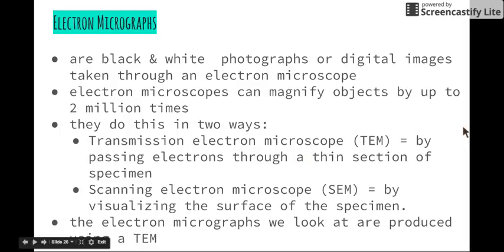Before we go on to actually have a look at some electron micrographs and start analyzing them, we obviously need to know what electron micrographs are. Electron micrographs are black and white photographs or digital images that are taken through an electron microscope. You'll recall that a light microscope can give us color images, whereas electron microscopes can only give us black and white ones.